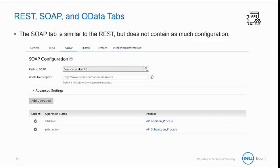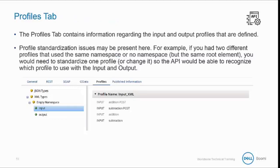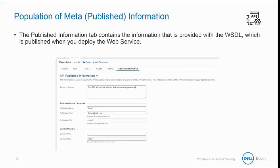The SOAP tab is similar to REST, but it does not contain as much configuration. The Profiles tab contains information regarding the input and output profiles that are defined. You may run into profile standardization issues presented here — for example, if you had two different profiles that use the same namespace or no namespace, you would need to standardize one profile so the API can recognize which profile to use with the input and the output. The Published Information tab contains the information provided with the WSDL, and this is published when you deploy the web service.